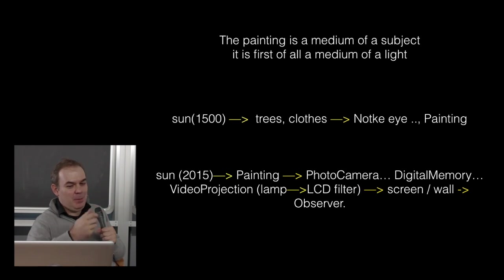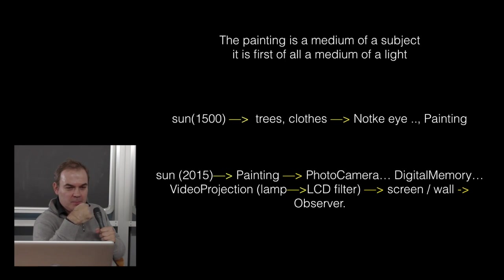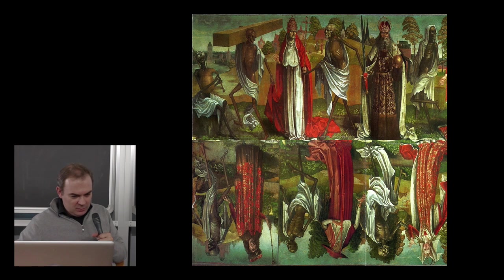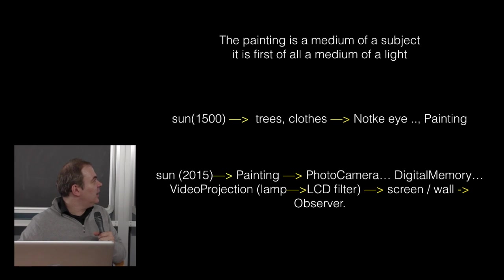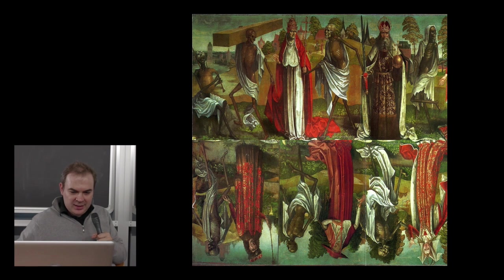My intention is to say the painting is not just a medium of the subject — it is a medium of light. This concept has also been done in other works, for example Veggie, the one that's in Gisela Cellini's book. That one has a shorter path, but the concept is still valid.